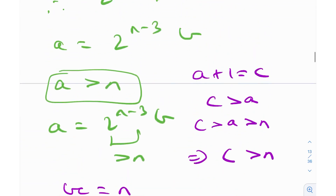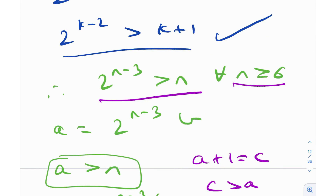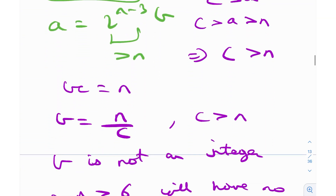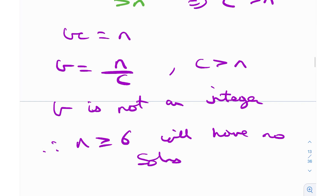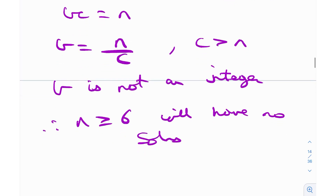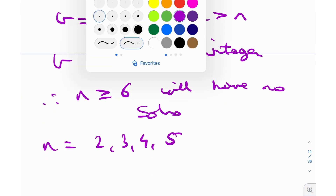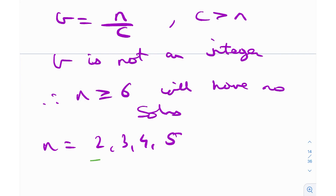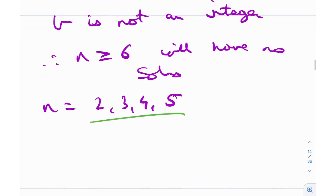This entire construction and inequality is only valid for n greater than or equal to 6. That means if a solution exists, it will only be at n equals 2, 3, 4, or 5. We are not including n equals 1 because we have already seen it gives no solution. So n equals 2, 3, 4, 5 are our only possible solutions.